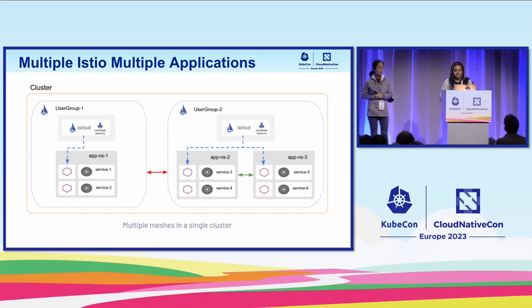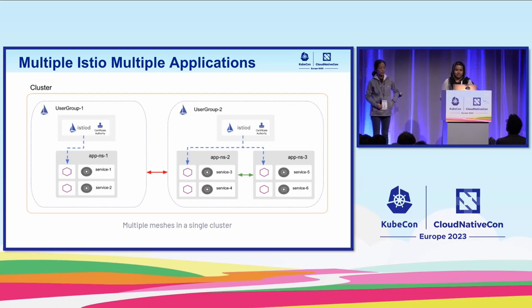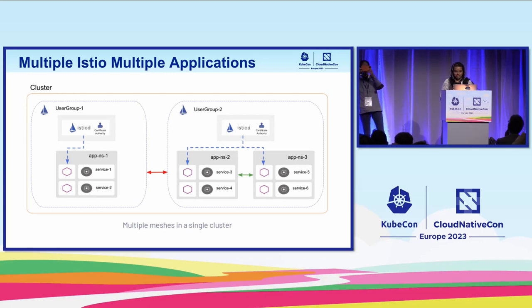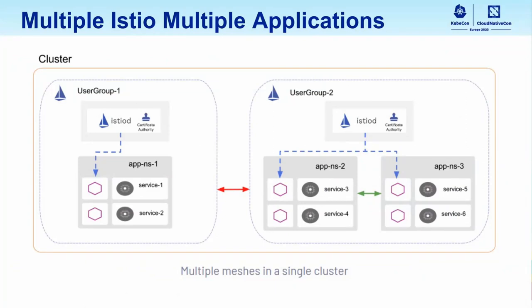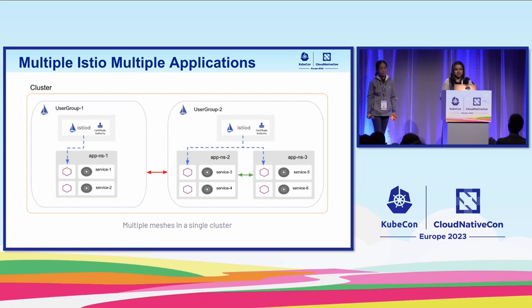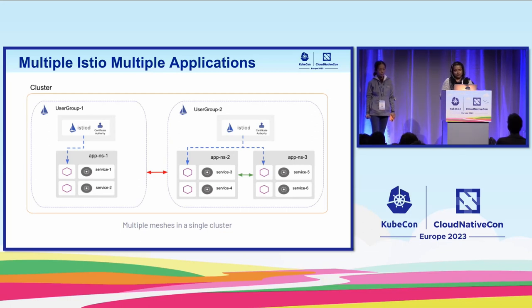I think it's now clear how the single control plane-based model works — that's the widely used model these days. But for us in the telco 5G core requirements, it was always the case that our platform would come with simply a bare minimum Kubernetes cluster with no service mesh installed. We have CNFs — basically applications or network functions running on the cluster — and each CNF may be from a different vendor with their own service mesh solutions. In such cases, it was getting difficult to follow this single control plane-based model. So we do require, in a single cluster, mechanisms to run multiple Istio control planes.